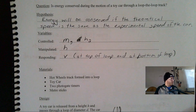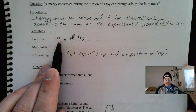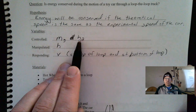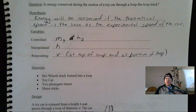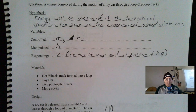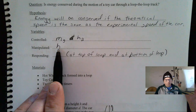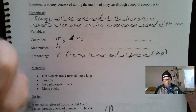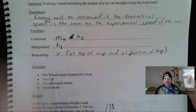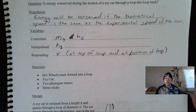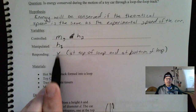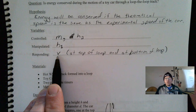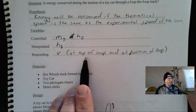The mass of the car does not change during the lab — that is a controlled variable — as well as height two, the height of that roller coaster loop, which stays the same. You manipulate height one, which is the height you drop the car from, and you have to decide how high to drop it so the car goes through the loop properly. The responding variable is the speed of the car: one at the top of the loop, and one at the bottom.